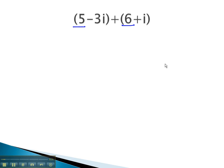5 and 6 are both constants, and adding them together, we get 11. The negative 3i plus i would give us negative 2i, and just as we combined like terms before, we can combine like terms in the complex numbers to get 11 minus 2i.